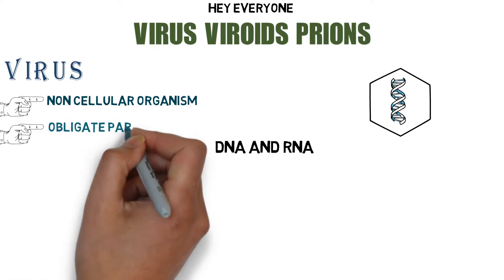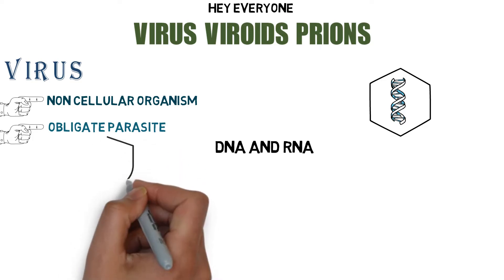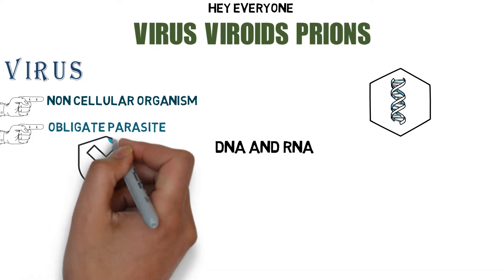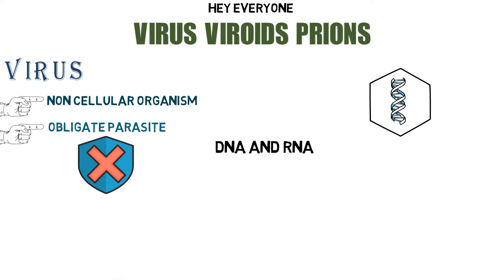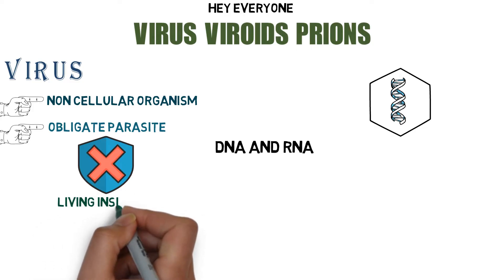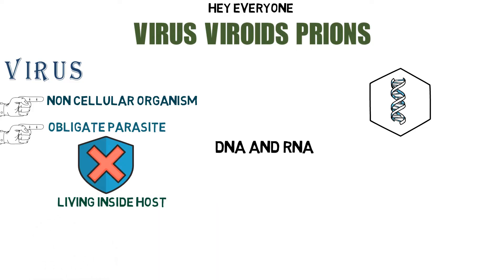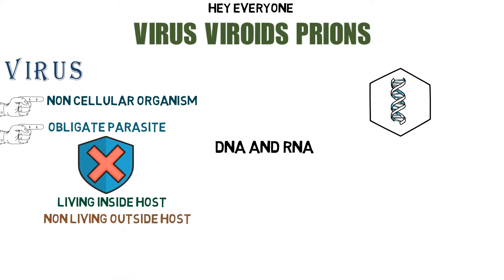The next point is obligate parasites. A parasite is one that survives on another body. An obligate parasite means it can only live within its host body — without its host, it can't survive. That's why it's called an obligate parasite. So if the virus is within the host body, it is living; outside the host body, it is non-living.